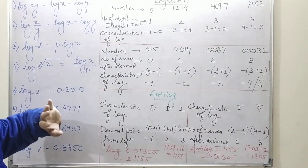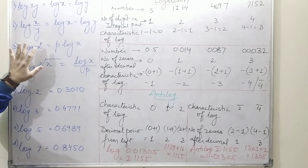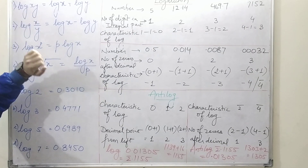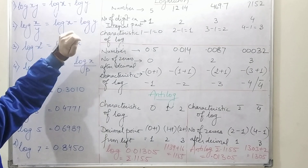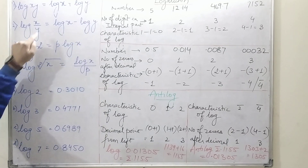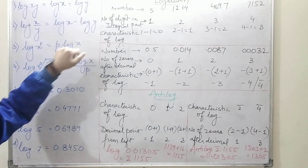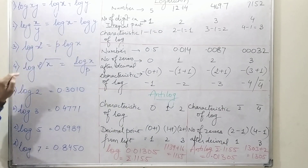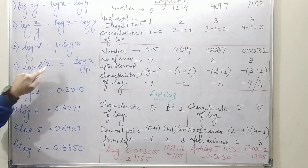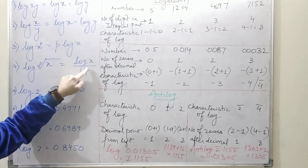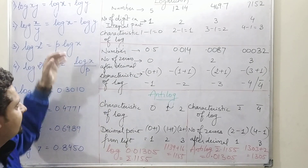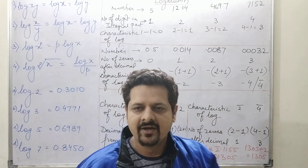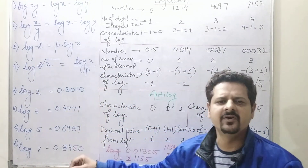I have listed four basic formulas that are important for log: log(xy) = log x + log y; log(x/y) = log x − log y; log(x^p) = p·log x; and log(p√x) = log x / p. These formulas are very important when you go for calculation and you can use them to simplify your work.